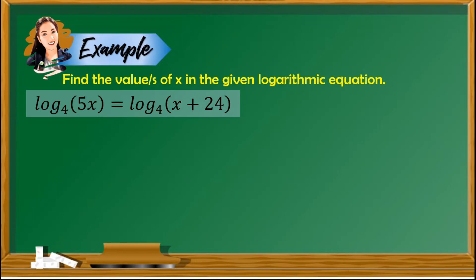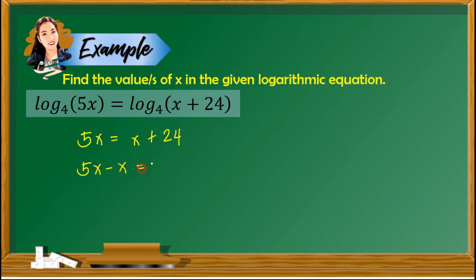Let us now have some examples. Number one: find the value of x in the given logarithmic equation — logarithm of 5x with base 4 is equal to logarithm of x plus 24 with base 4. To solve this, observe that both sides have a logarithm with the same base of 4, so we can apply the one-to-one property. We simply drop the logarithm with base 4, giving us 5x is equal to x plus 24. Combining like terms: 5x minus x equals 24, so 4x equals 24. Dividing both sides by 4, x is equal to 6.